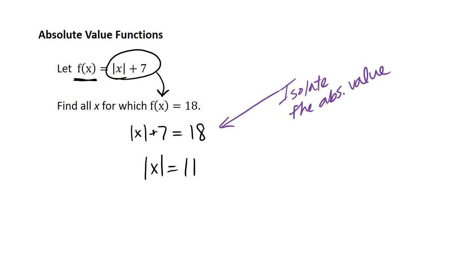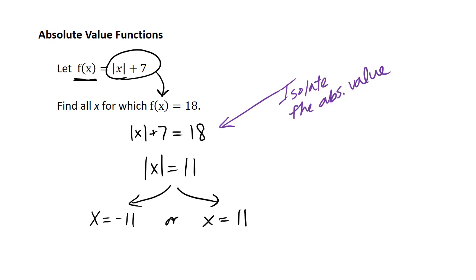This means x is 11 units from 0 on a number line, so it could be in the positive direction or the negative direction. So x equals 11 or x equals negative 11. I usually write the negative on the right, but the main thing is that you have both sides of 0. X is already by itself in both cases, so these are our two solutions. You can check them by substituting back.